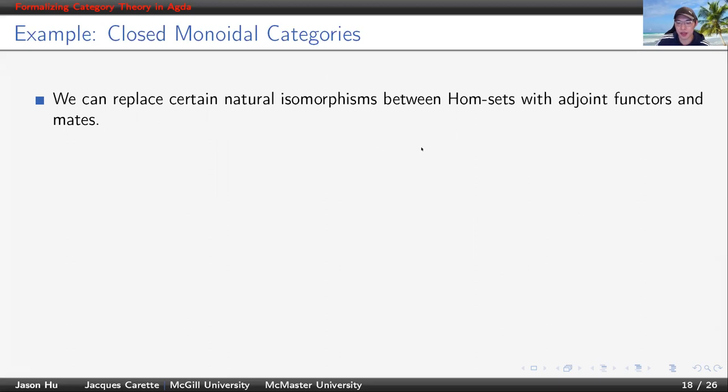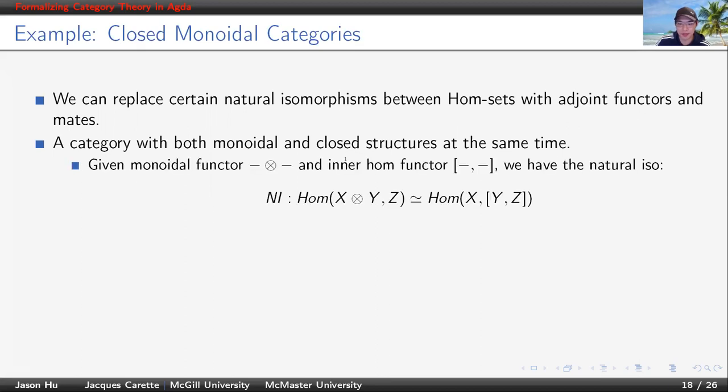Now we see we can replace some specific natural isomorphisms between hom-sets in a definition of adjunctions and mates. Let's see how we use this to replace the general kinds of natural isomorphisms between hom-sets by considering closed monoidal categories. A closed monoidal category is a category that is monoidal and closed at the same time. Among other laws, it is required that the monoidal functor and the inner hom-functor satisfy this natural isomorphism Ni. Note that all X, Y, and Z are natural in Ni.